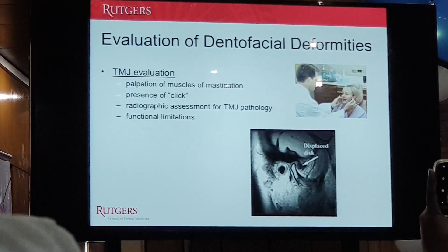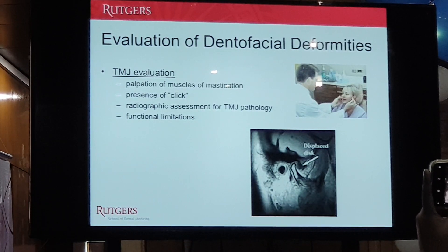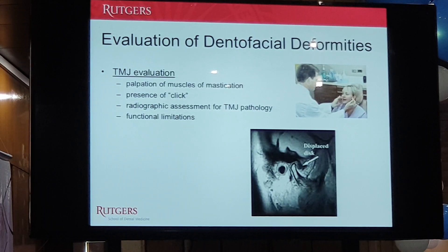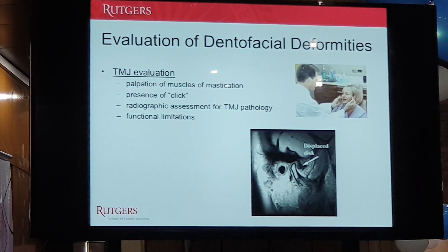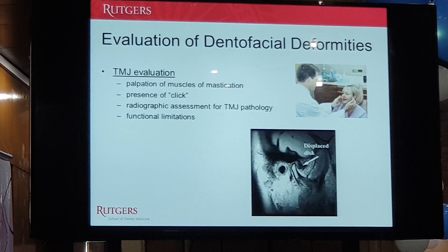TMJ evaluation is very important. If there is TMJ dysfunction, you need to document it and discuss it with the patient, because certain procedures can make it worse. Sagittal split osteotomies can put pressure on the temporomandibular joint, while vertical ramus osteotomies may actually relieve some of that pressure. So you have to document any TMJ dysfunction before proceeding.